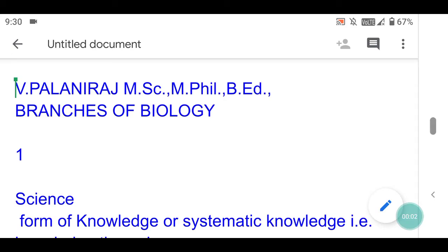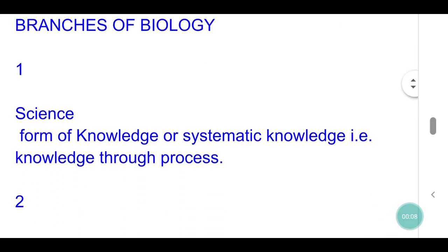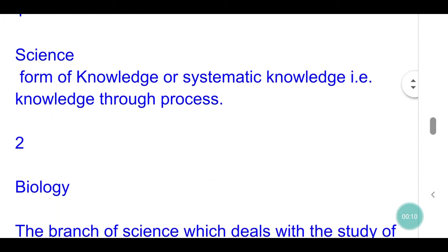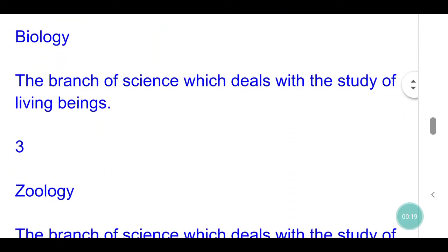Hello viewers, now we are going to see about branches of biology. Science is a form of knowledge or systematic knowledge, that is, knowledge through process. Biology is the branch of science which deals with the study of living beings.